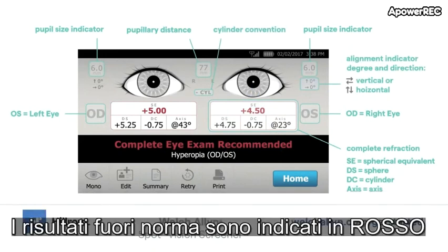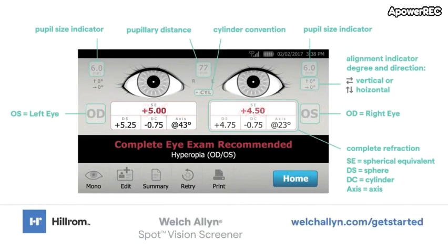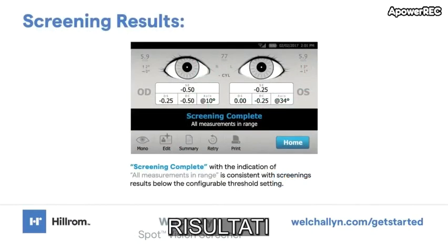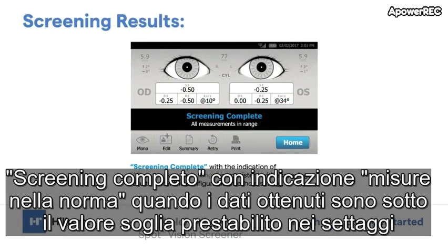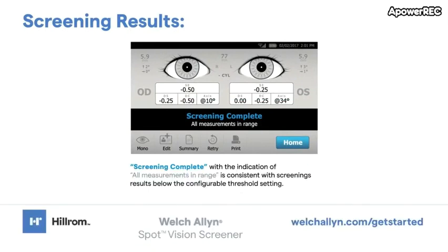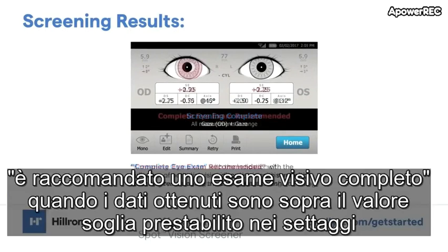Results that are out of range are indicated in red. A result of 'Screening complete' with all measurements in range is consistent with screening results below the configurable threshold setting. A result of 'Complete eye exam recommended' with indication of potential vision disorders is consistent with screening results above the configurable threshold setting.